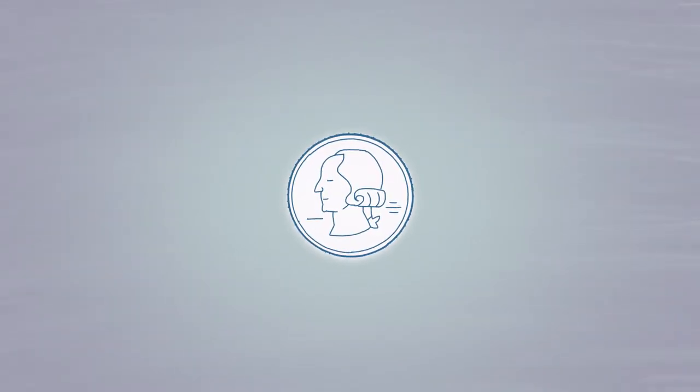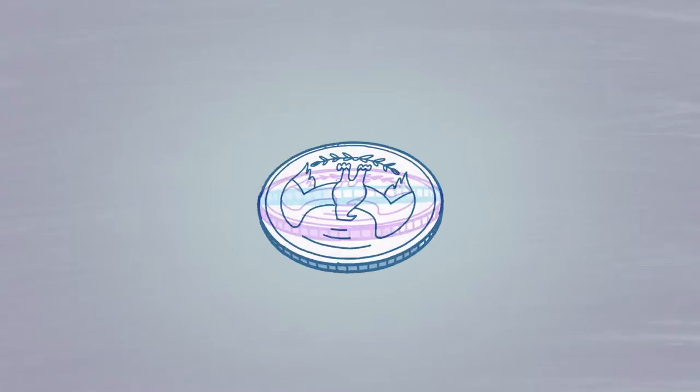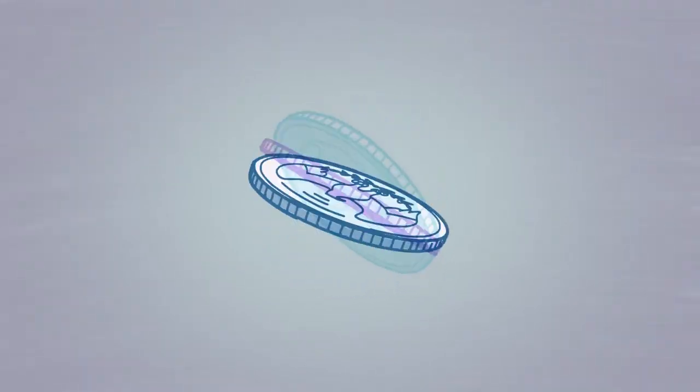And when the measurement is performed, it's almost like it has to decide. So I like to use the analogy of a coin. A coin is a system with two states, heads and tails. And the superposition is a little bit like a coin that's floating in midair and it hasn't decided whether it's going to land heads or tails.